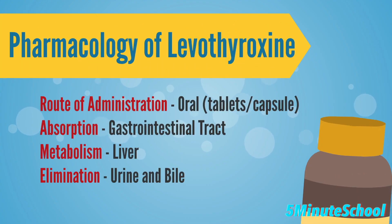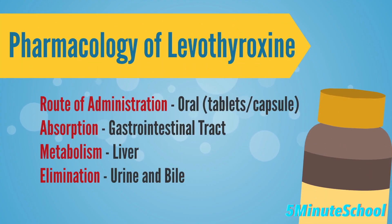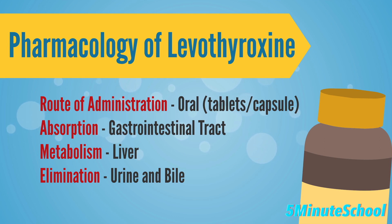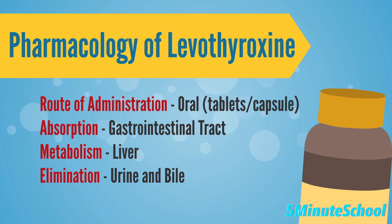In terms of the pharmacology of levothyroxine, the route of administration is an oral tablet, usually taken once daily. The absorption is generally good from the gastrointestinal tract, but can be affected by various factors such as food and certain medications. The majority of levothyroxine is metabolized by conversion to T3 in the liver and peripheral tissues, and the body excretes the metabolized thyroid hormone through urine and bile.